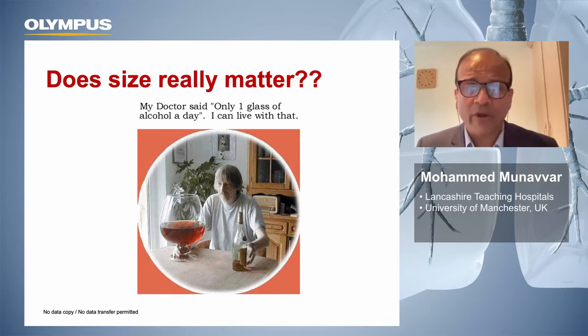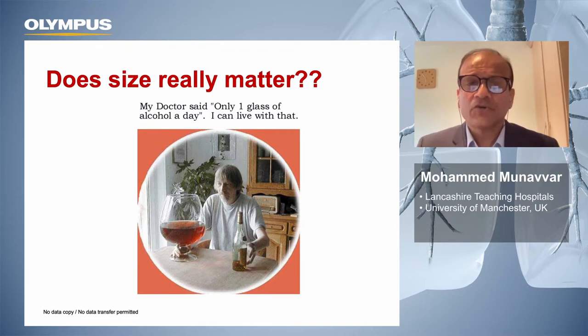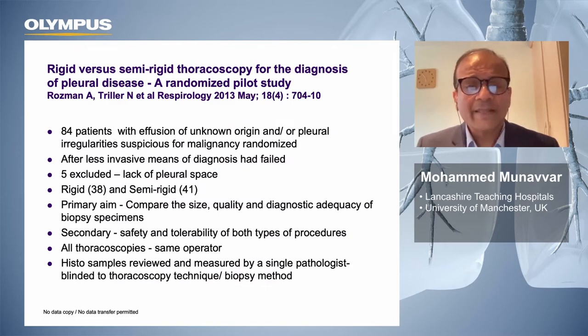In some countries such as the UK, the existing semi-rigid thoracoscope could not be used because it was not autoclaveable. An autoclaveable newer version was evaluated from 2004 to 2008 and then launched in the UK, published in the European Respiratory Journal. The only problem repeatedly encountered was that biopsies obtained were small, which led to comparative studies.